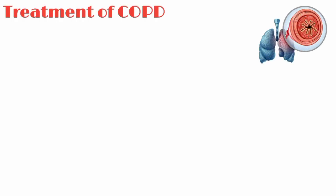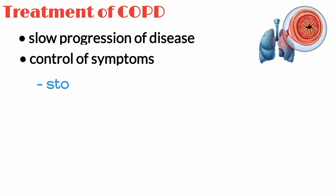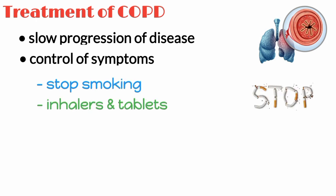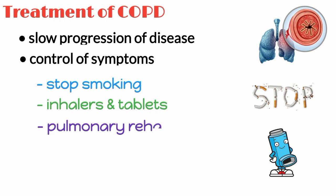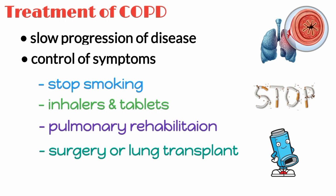There is currently no cure for chronic obstructive pulmonary disease, but treatment can help slow the progression of the condition and control the symptoms. Treatments may include stopping smoking, inhalers and tablets to help make breathing easier, pulmonary rehabilitation, and surgery or a lung transplant.